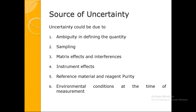Sources of uncertainty: errors are responsible for uncertainties. The first important parameter is the ambiguity in defining the quantity — for example, when testing vitamin A, you must be very clear whether you define it as retinol, retinol acetate, or palmitate. The next is sampling — almost 50 percent of uncertainties that arise in testing are actually due to sampling, though it is not the focus today.